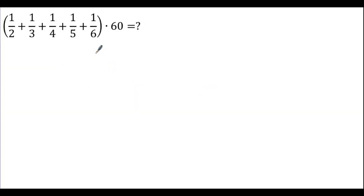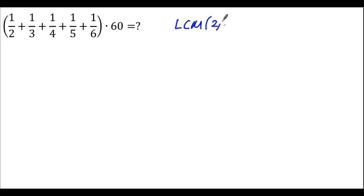Next example — I'll show two ways to solve it. As you already know, we use the BODMAS rule, so the first thing we do is the brackets. We need to add all these fractions. The denominators are 2, 3, 4, 5, and 6. The LCM of these numbers is 60, so I have to make the denominator 60.